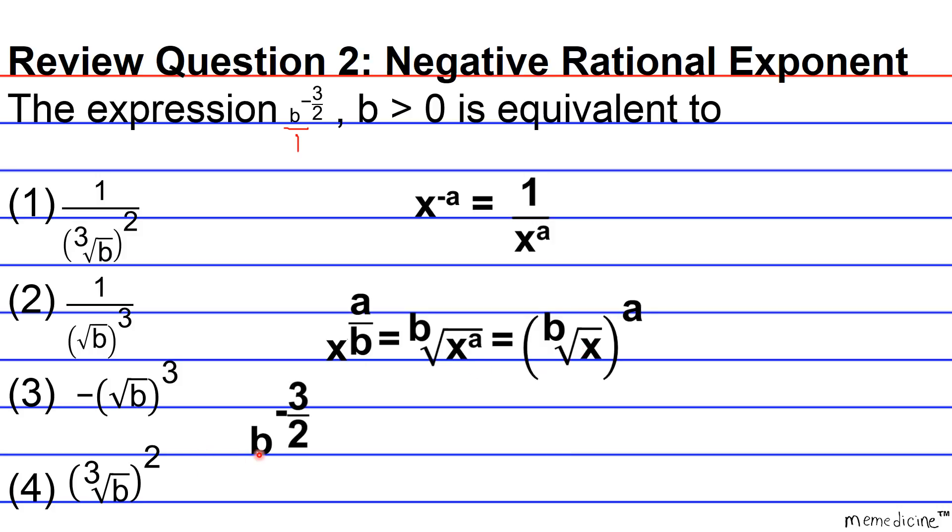So you have base b raised to the negative 3 over 2. We're going to take the inverse of the base, remembering that the base is an actual fraction. Therefore, this is going to become 1 over b raised to the 3 over 2.